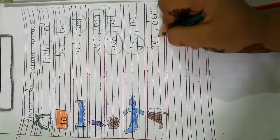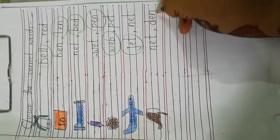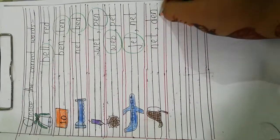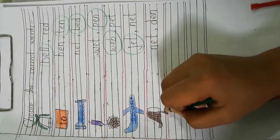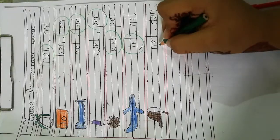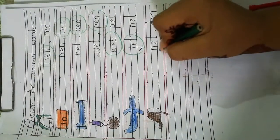Net. N E T net. D E N den. Net, den. So, this is net. So, we will circle this word. Net.